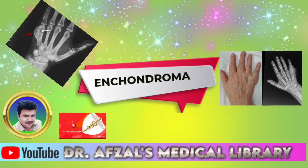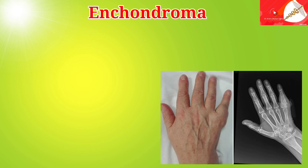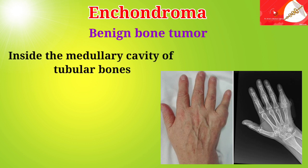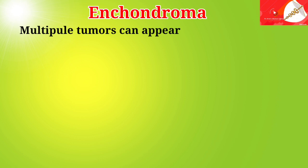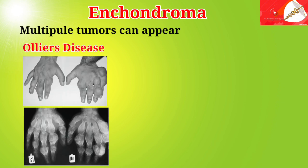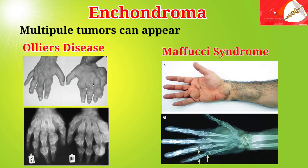Dr. Zell here, and the topic is enchondroma. Enchondromas are benign bone tumors that begin in the cartilage found inside the medullary cavity of tubular bones. They are the most common type of hand and foot tumor, although they can develop in long bones. Most often they are solitary; however, multiple tumors can appear as part of conditions such as Ollier's disease and Maffucci syndrome. Single enchondromas rarely become cancerous.